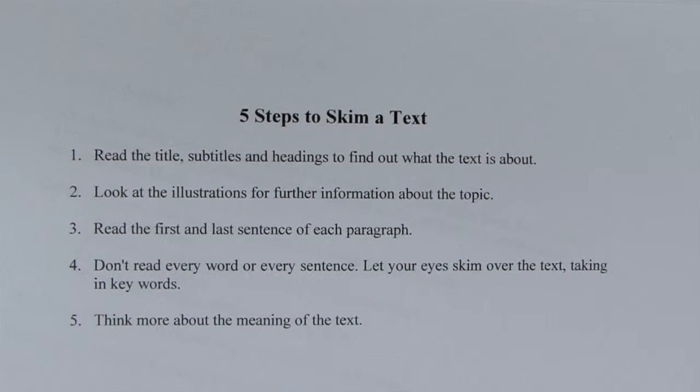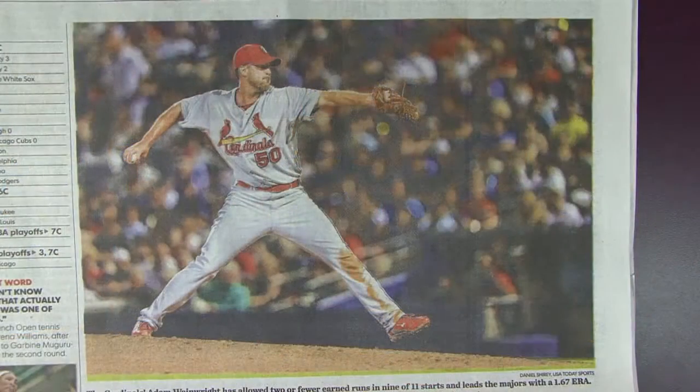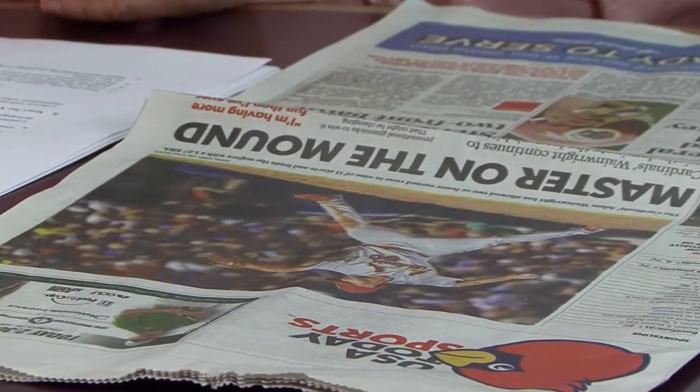Could you read step two out loud? Step two: look at the illustration for further information about the topic. So what does that picture tell us? It's a picture of a pitcher, which we already knew because of 'Master on the Mound.' And how is he pitching? What emotion or attitude does that picture give off?